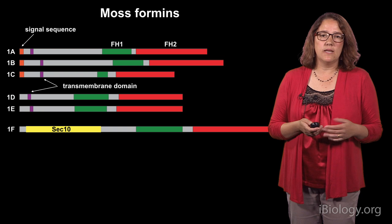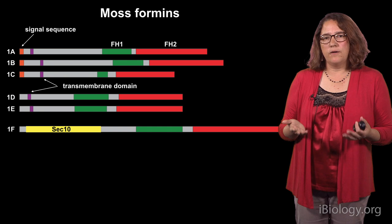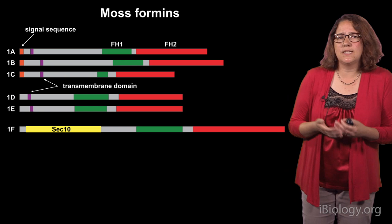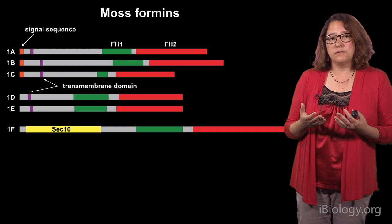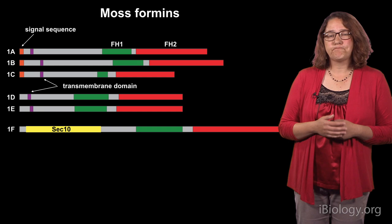What about the formins in moss? How many are there? Formins belong to gene families in humans and also in plants. The model system Arabidopsis thaliana has 21 formin genes that group into two different families. It's really hard to study the function of a family with so many gene members, because functional redundancy makes it difficult to identify a phenotype. In moss, we also have a formin gene family, and it's slightly smaller, so that helps us a little bit.